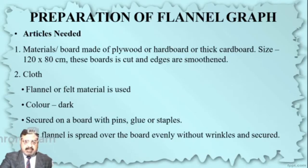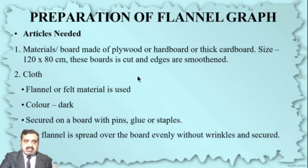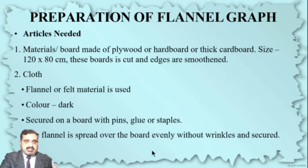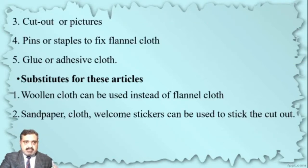How can we prepare it? Number one, materials: board made of plywood, hardwood, or thick cardboard — its size may be 120 x 80 cm. This board is cut and edges are smoothed. Cloth: flannel or felt material is used and a dark color must be used. It is secured on the board with pins, glues, or staples, and the flannel cloth is spread over the board evenly without wrinkles and secured.